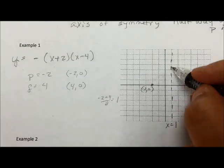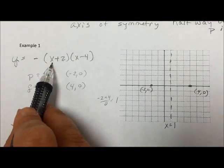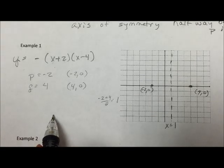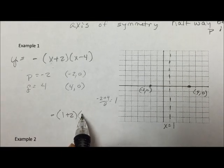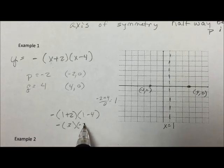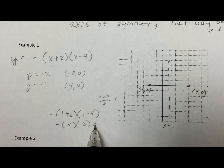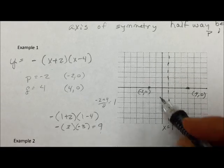I can find where the y value is by going back to my equation and putting 1 in place of x. So I'm going to have negative 1 plus 2 times 1 minus 4. So negative 3, negative 3, so this equals 9. So the vertex is going to be at the point 1, 9.